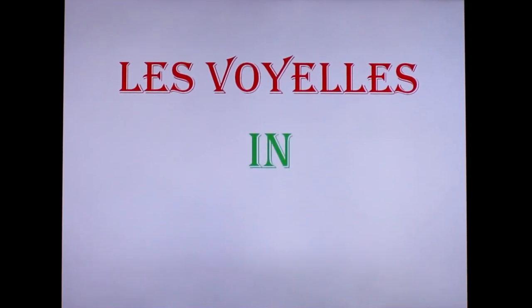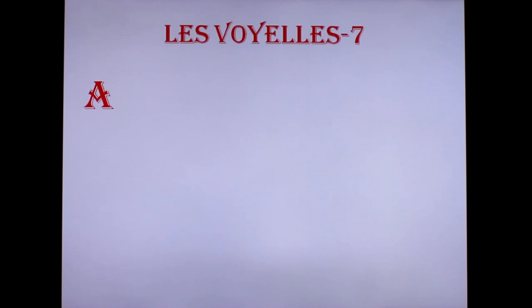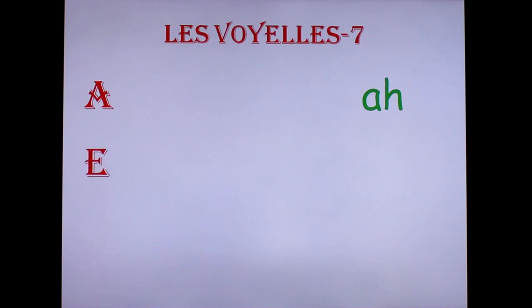Lesson 2. In this lesson we are going to learn les voyelles in French. In French we have seven vowels which we call les voyelles. Let us examine each one of them. The first vowel A sounds as in the word 'ami' in French which means friend, or 'attention' which means attention, or the word 'agréable' which means agreeable. The second vowel is E which sounds as in 'me' the reflexive pronoun, or 'le' the French definite article.